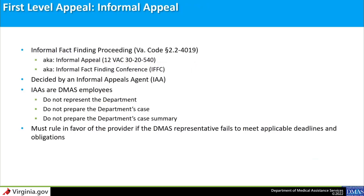Informal provider appeal regulations allow for an informal fact-finding proceeding at the request of the provider. At DMAS and in the Virginia Administrative Code, we call these informal appeals. Informal appeals can consist of an informal fact-finding conference (IFFC) and a written decision, or, if the parties agree, a decision can be issued based solely on the written submissions. Informal appeals are decided by an informal appeals agent, or IAA. IAAs are DMAS employees. It is important to know that IAAs do not represent the department, do not prepare the department's case, and do not prepare the department's case summary. If the department representative fails to meet applicable deadlines and regulations, the IAA and DMAS appeals must rule in favor of the provider.